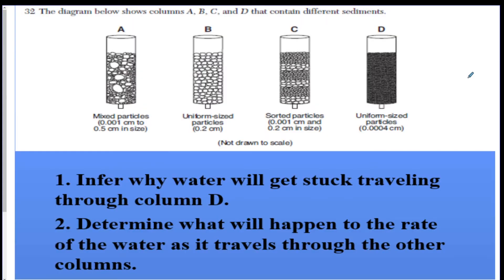So we got four different columns here. The question is, number one, infer why water will get stuck traveling through column D. Now these are uniform sized particles. Uniform size means the same. But look, they're so tiny.